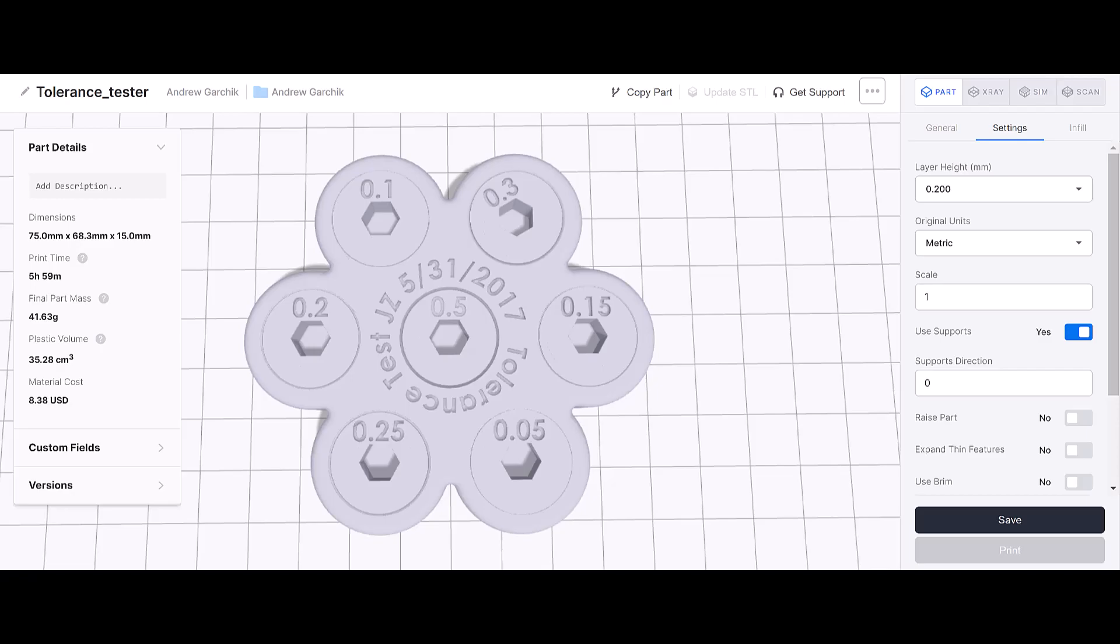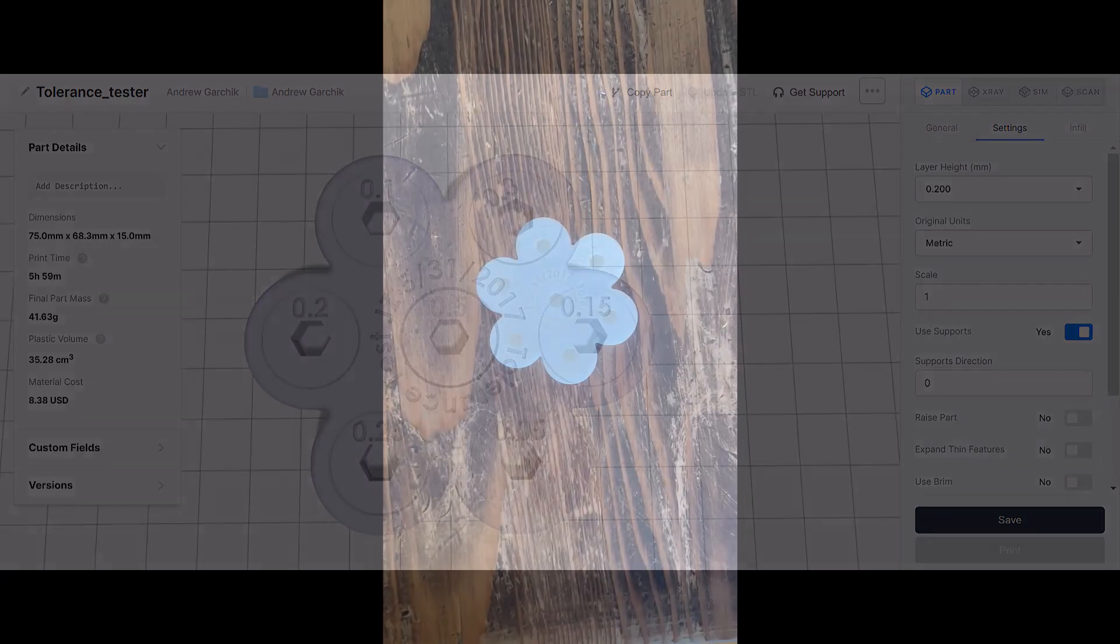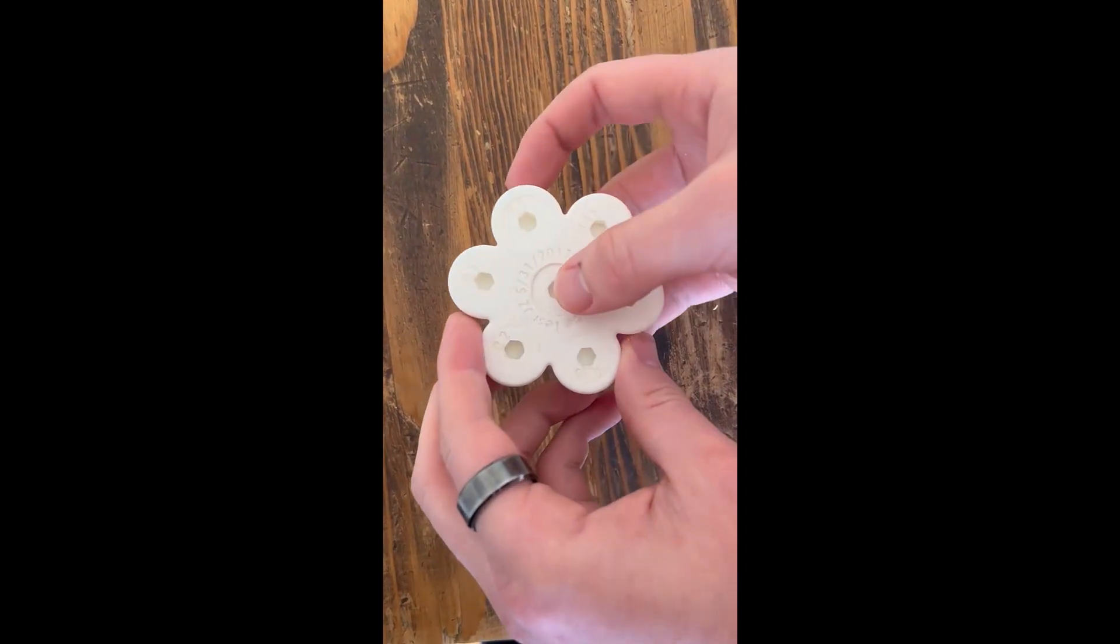Taking a look at my printer settings, I am using 0.2 millimeter layer height with 20% infill utilizing supports and I am printing using a plastic filament. I printed this part out and we can see how it works in action.